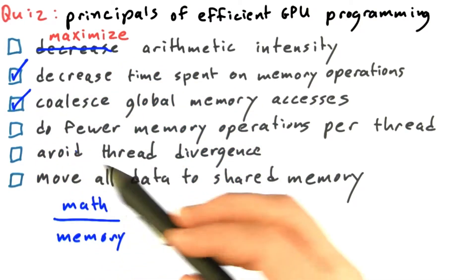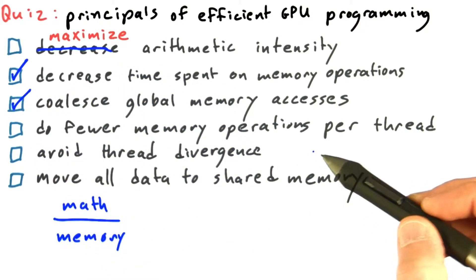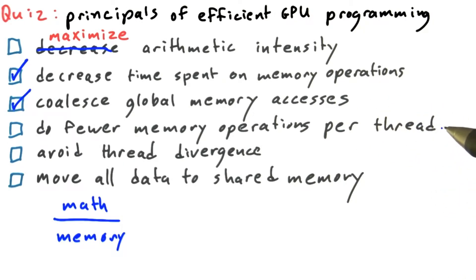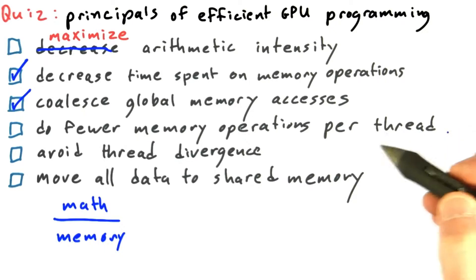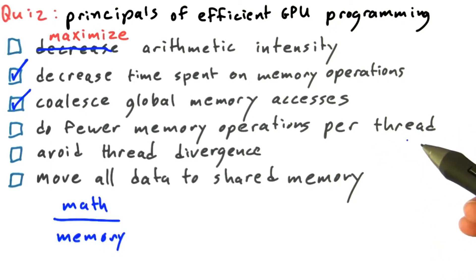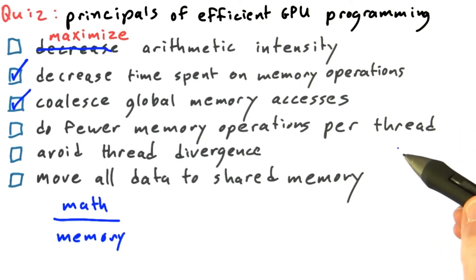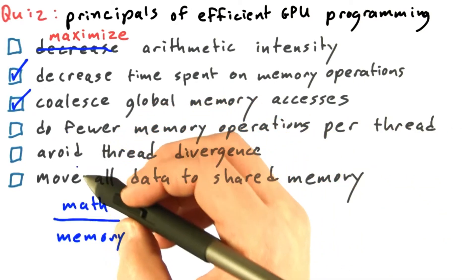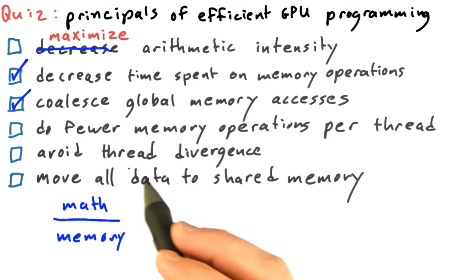Now doing fewer memory operations per thread — well, this may or may not help. For example, we might want to move data into the fast shared memory, do some operations on it there, and then move it back. That would be more total memory operations, but the overall time spent on accessing memory would go down because we're doing a lot of frequent accesses within shared memory. So this one's not correct necessarily.